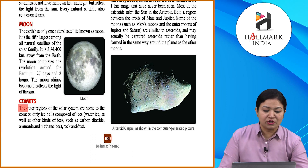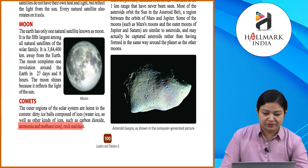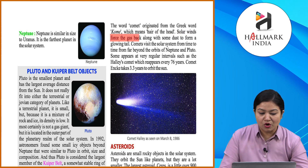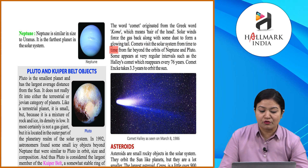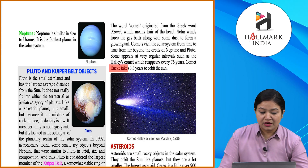The outer regions of the solar system are home to comets — dirty ice balls composed of water ice as well as other ices such as carbon dioxide, ammonia, and methane, along with rock and dust. The word comet originated from the Greek word 'comb,' which means 'hair of the head.' Solar winds force the gas back along with some dust to form a glowing tail. Comets visit the solar system from far beyond the orbits of Neptune and Pluto. Halley's Comet appears every 76 years, and Comet Encke takes 3.3 years to orbit the Sun.